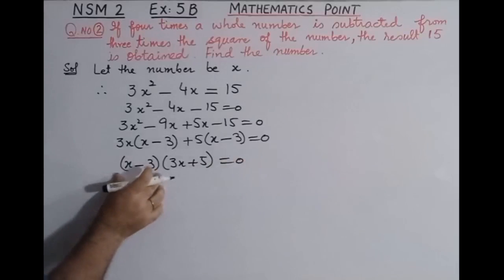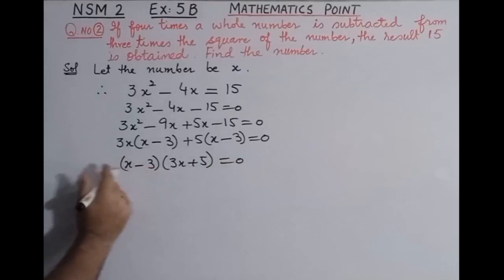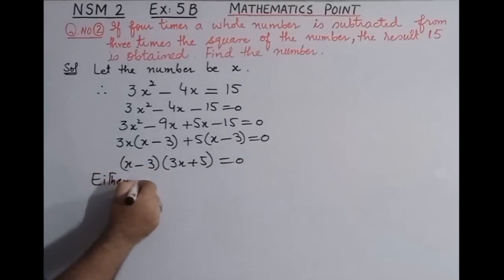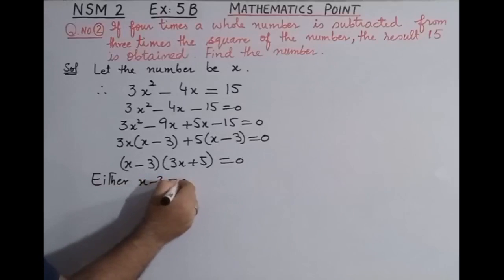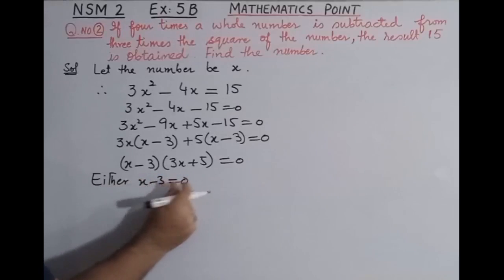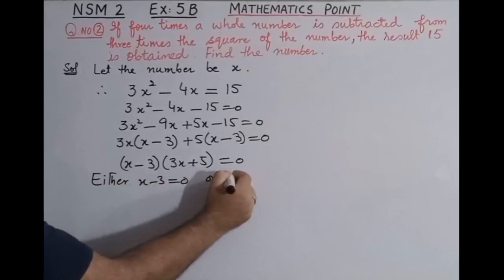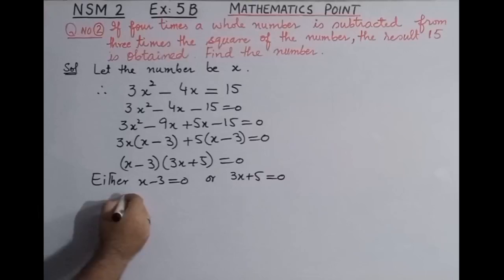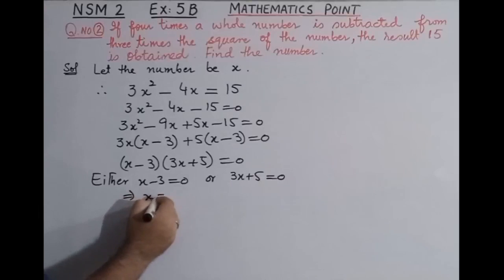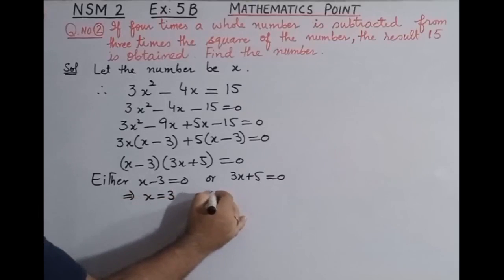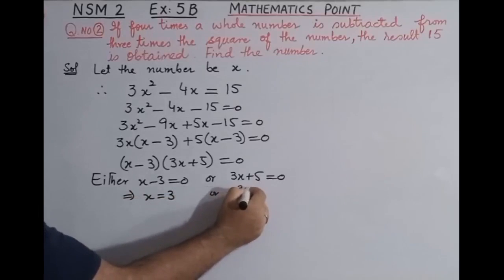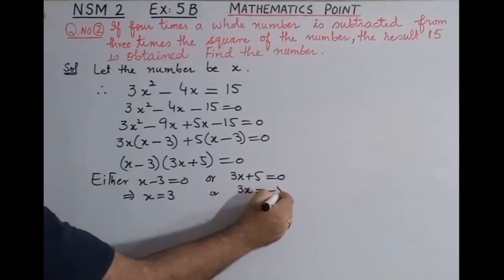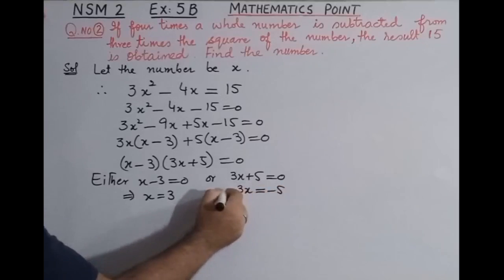Now we write the factors: (x - 3)(3x + 5) = 0. Either x - 3 = 0, which implies x = 3, or 3x + 5 = 0, which implies 3x = -5.